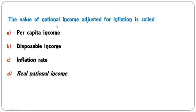If government expenditure (G) plus exports (X) plus investment (I) is greater than saving (S) plus imports (M) plus taxes (T), what will happen to national income? If this value is greater than that value, national income will rise. If it is less, national income will decline. Here it is greater, so national income will rise — B is the correct answer.